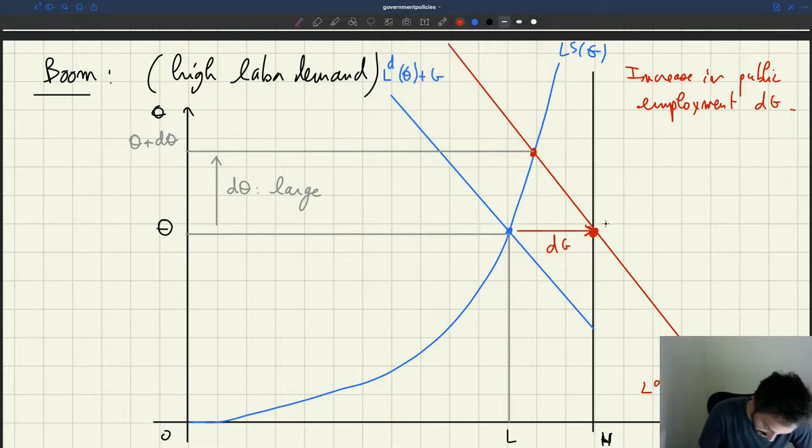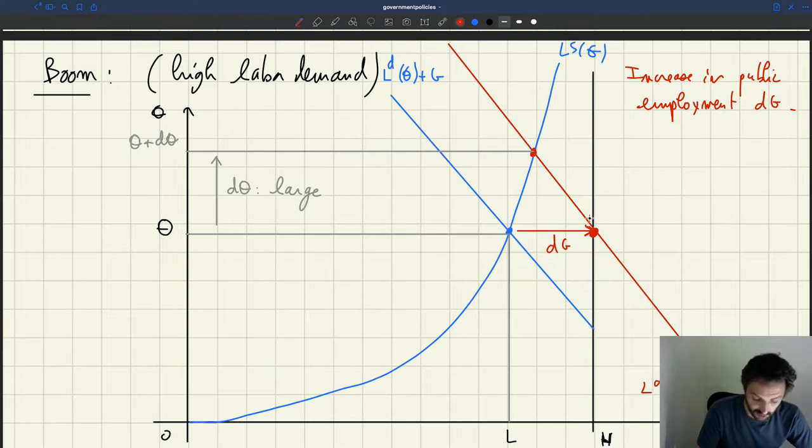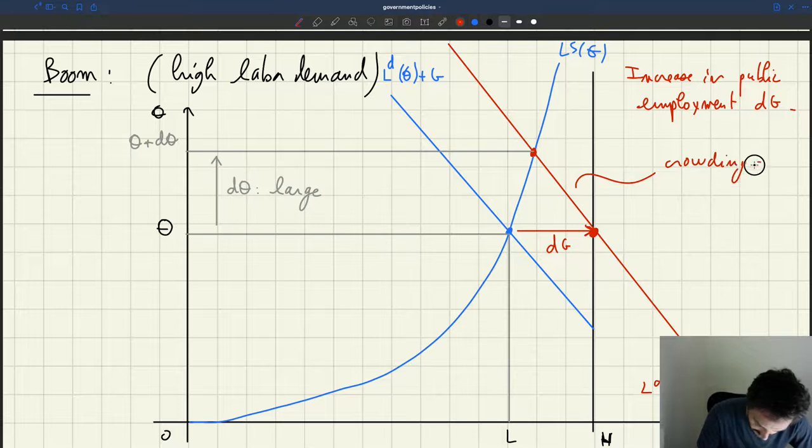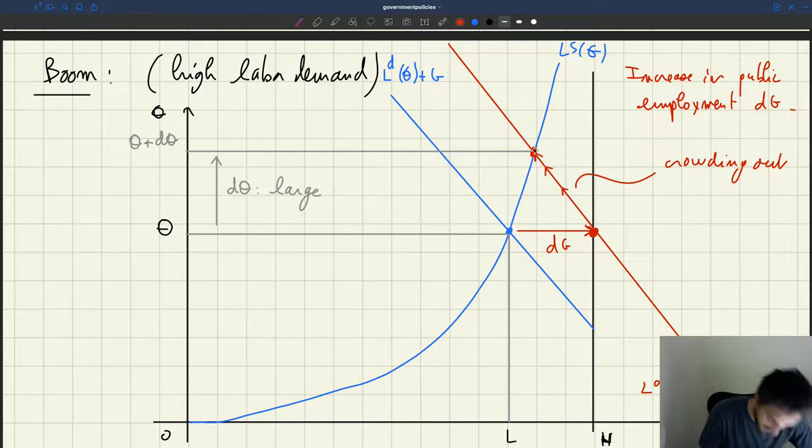So the crowding out leads from this point here. And in fact, because tightness goes up, firms, private firms reduce employment. So there's crowding out. And we move, you know, along this labor demand all the way to that point, to reach that equilibrium.